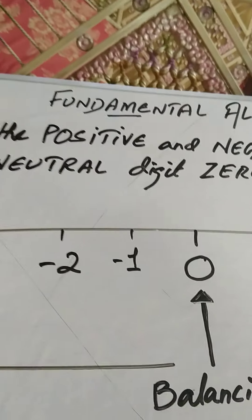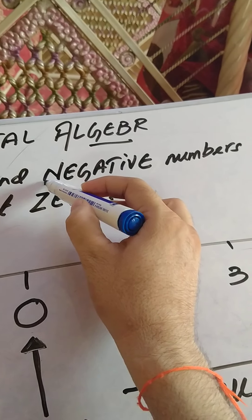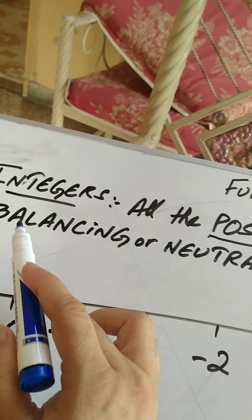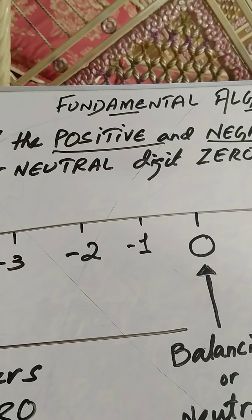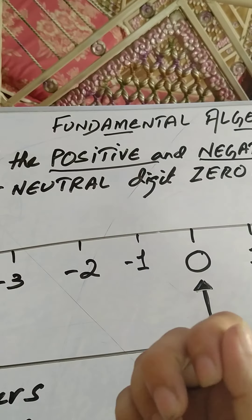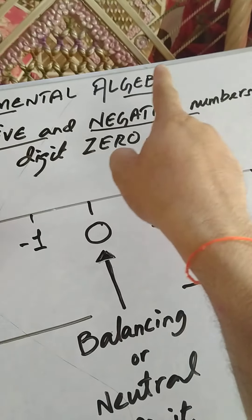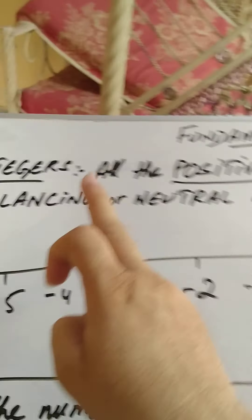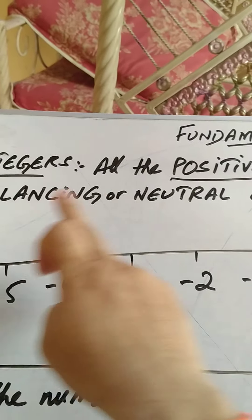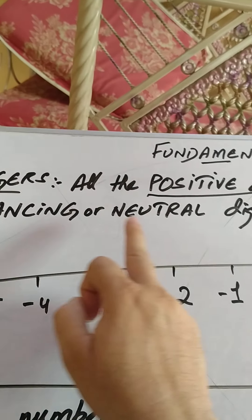Integers are all the positive and negative numbers, along with the balancing or neutral digit 0. Your teacher already told you in grades 5, 6, and 7 that every number has a sign before it — it will be positive or negative. So integers are all the positive and negative numbers with the balancing or neutral digit 0. Why do we call 0 a balancing or neutral digit? Because all numbers have a sign before them, but 0 is the one digit that does not have any sign before it.